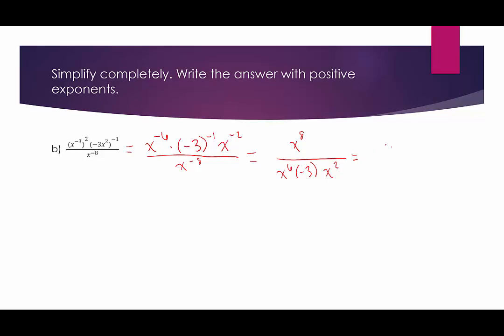Now let's clean up. In the numerator, we don't have to do anything. In the denominator, I have negative 3, and then x to the 8th. The x to the 8th terms actually end up canceling, so we would be left with 1 over negative 3, which we might rewrite as negative one-third. That would be the final simplified version for letter B.